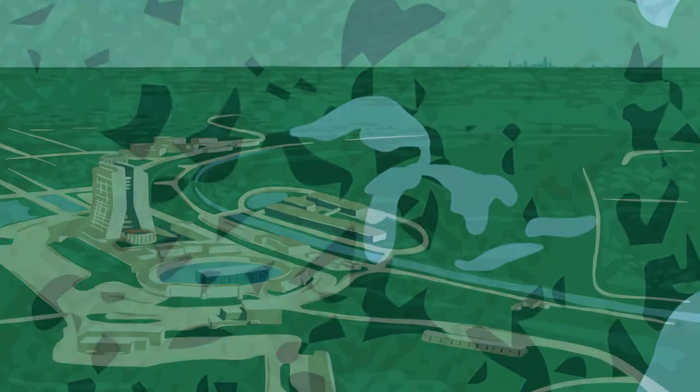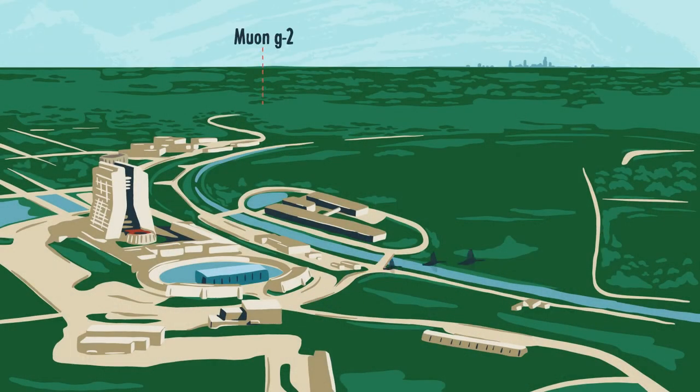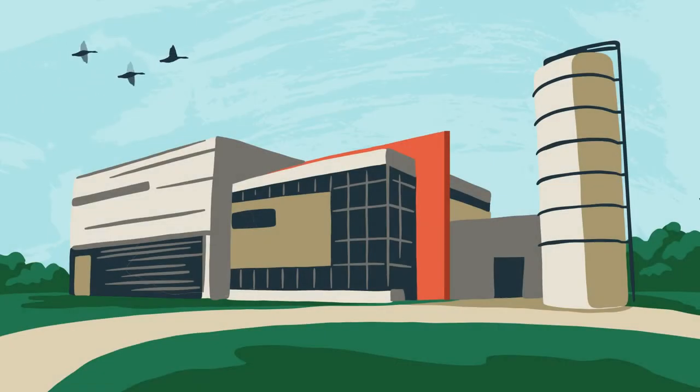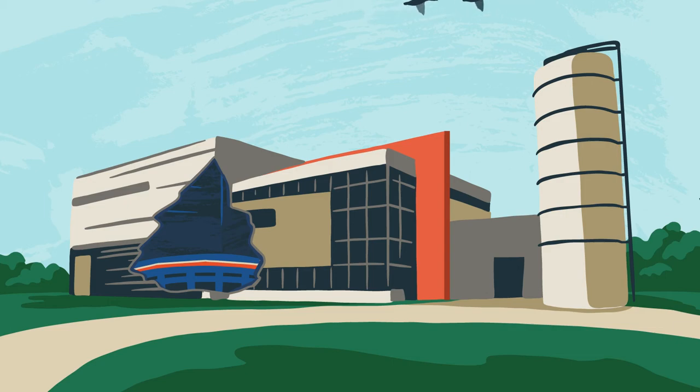Fermilab has a campus dedicated to muon experiments. One of them, the muon g-2 experiment, circulates a beam of muons around a 50-foot magnet and studies how they move.